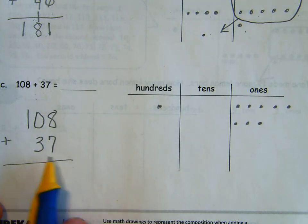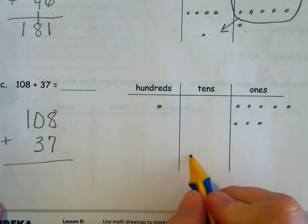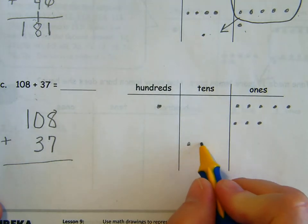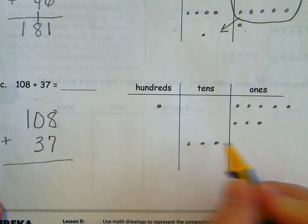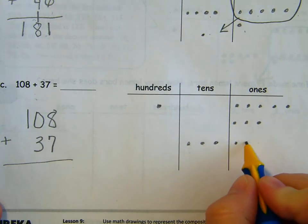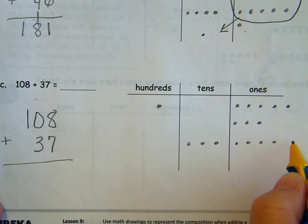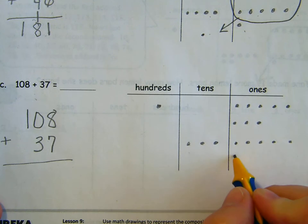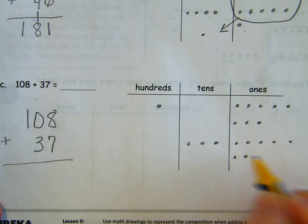37. There's no hundreds. We have three tens and seven ones. So we have 10, 20, 30, 31, 32, 33, 34, 35, 36, 37.